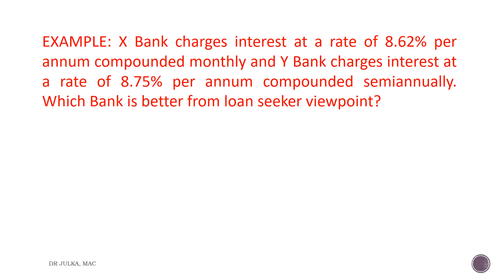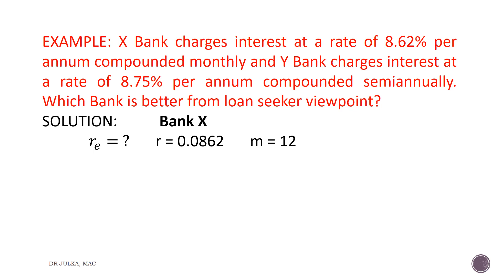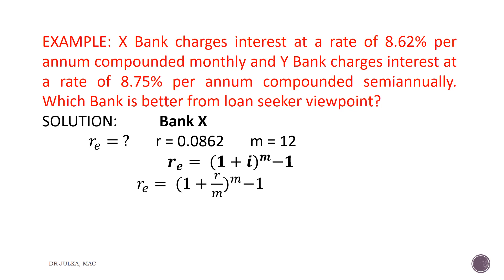A very practical example. Bank X charges interest at the rate of 8.62% per annum compounded monthly, whereas Bank Y charges interest at the rate of 8.75% per annum compounded semi-annually. If you want to take a loan, which bank is better from the loan seeker's point of view? First, for Bank X, we calculate the effective rate of interest. R is 8.62%, implying 0.0862, and since interest is compounded monthly, m equals 12. We apply the formula: Re equals 1 plus i, whole raised to the power m, minus 1, where i is R divided by m.